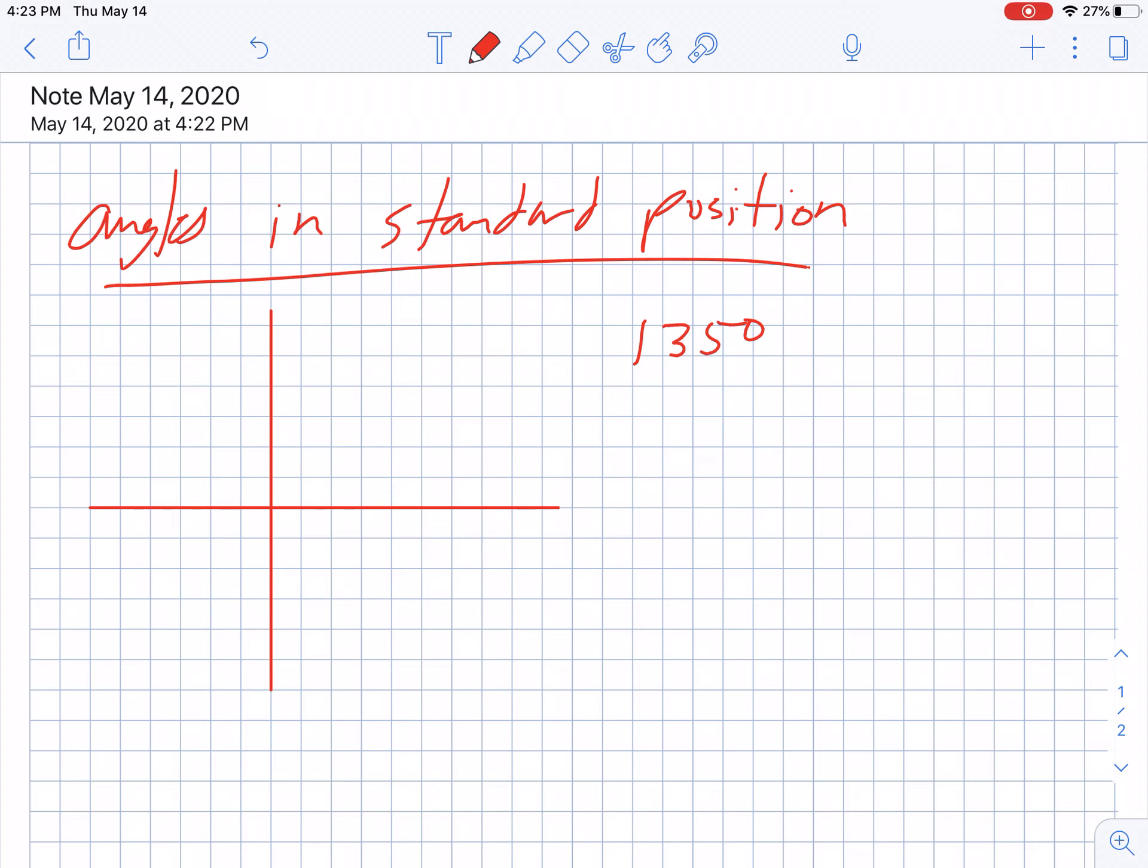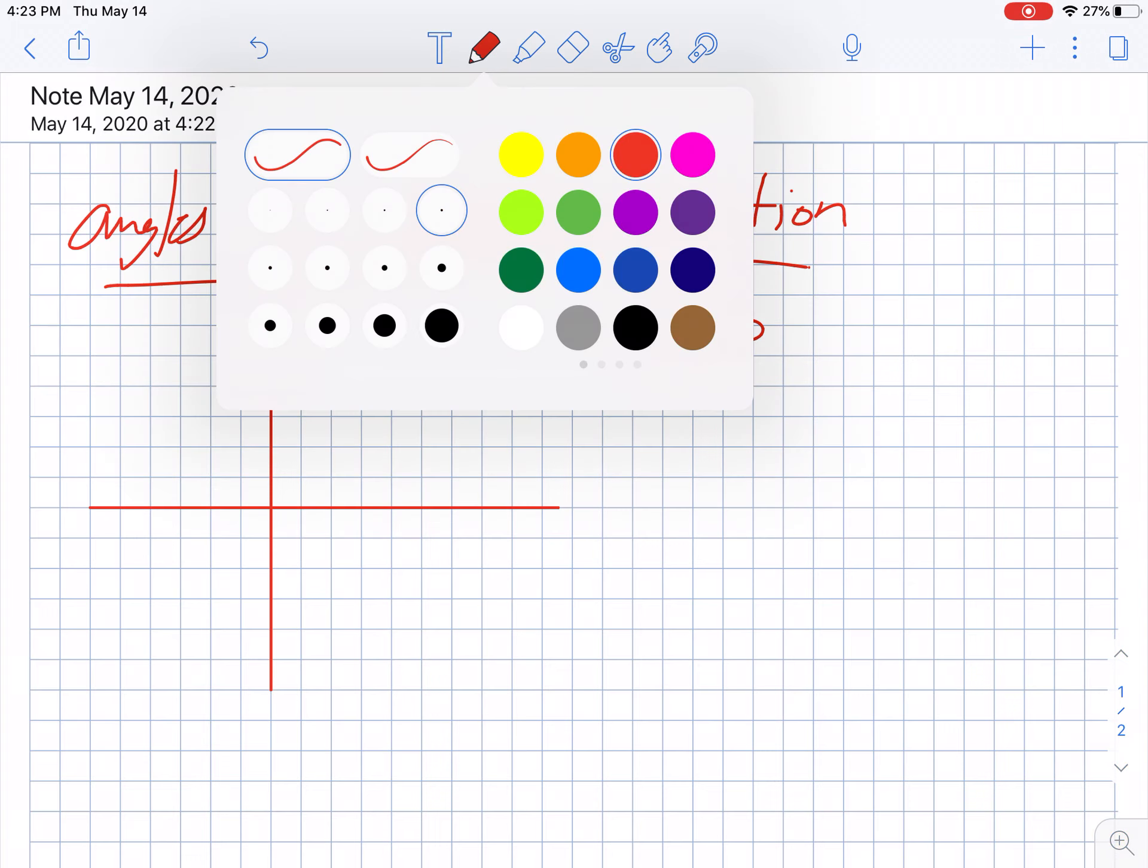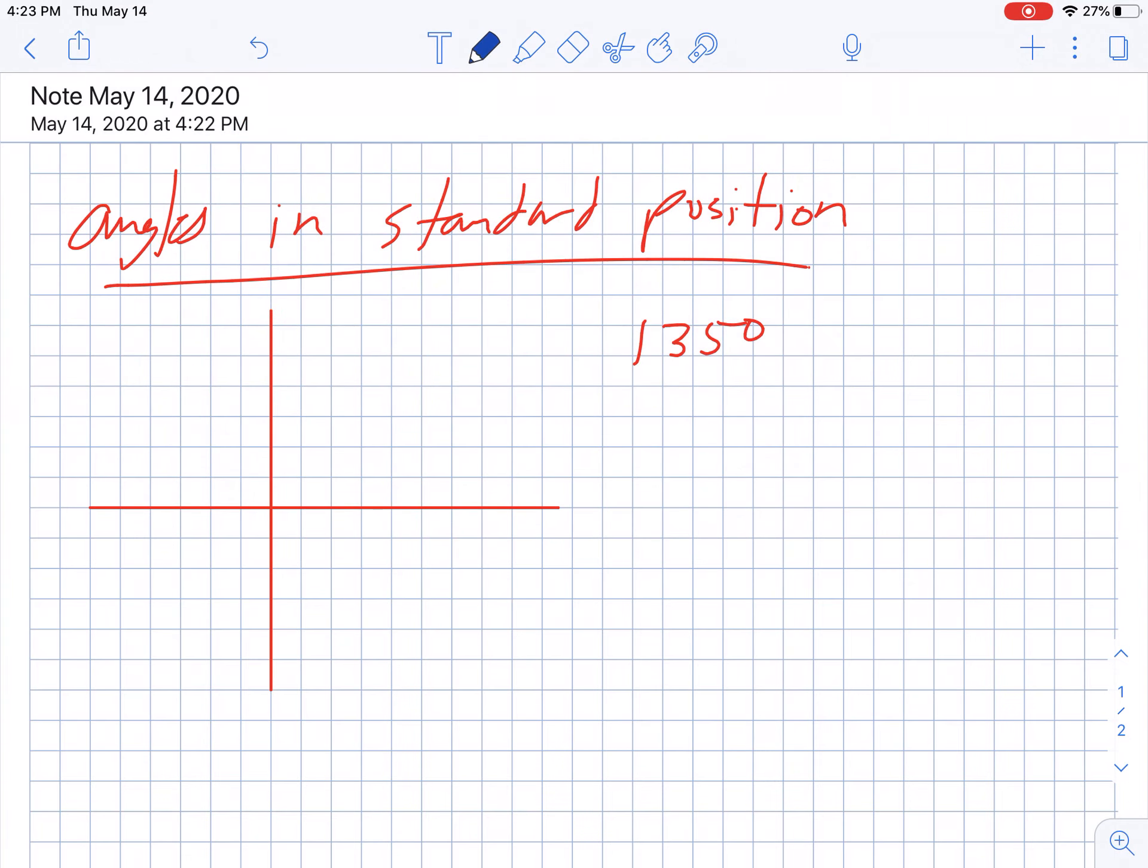So I start at my standard position on the x-axis and I'm going to go counterclockwise until I get to right in the middle, and that's where 135 degrees is. That looks like, there we go, that's better. So 135 degrees is right over here, it's right in the middle.